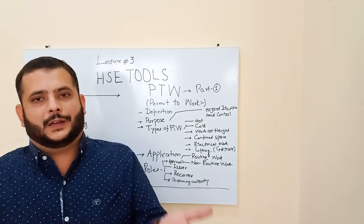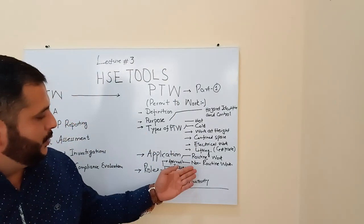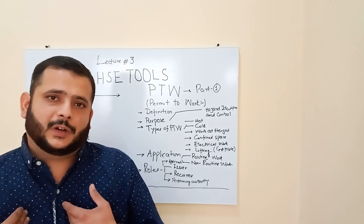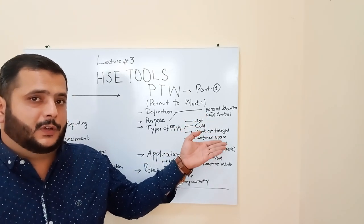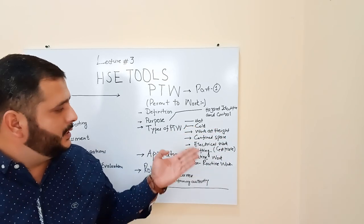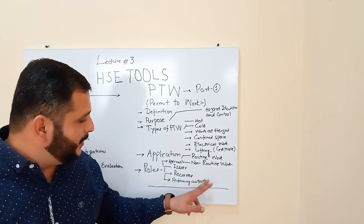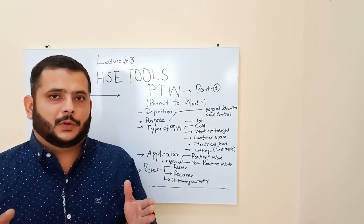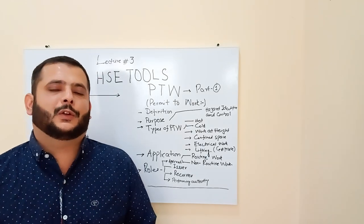The Receiver is also me — I apply for the permit, the Area Authority is the issuer, and I am the receiver because I receive the permit from him. I fill up the format according to the type of work — hot work, cold work, work at height, confined space, electrical work, or lifting — then go to the issuer, receive the permit, and proceed. The Performing Authority is your department who is actually doing the job at that specific location and area.